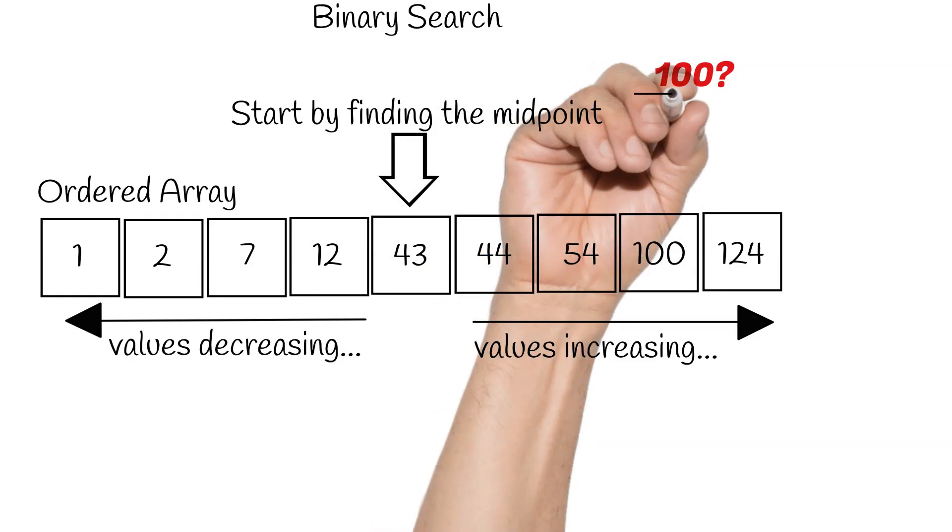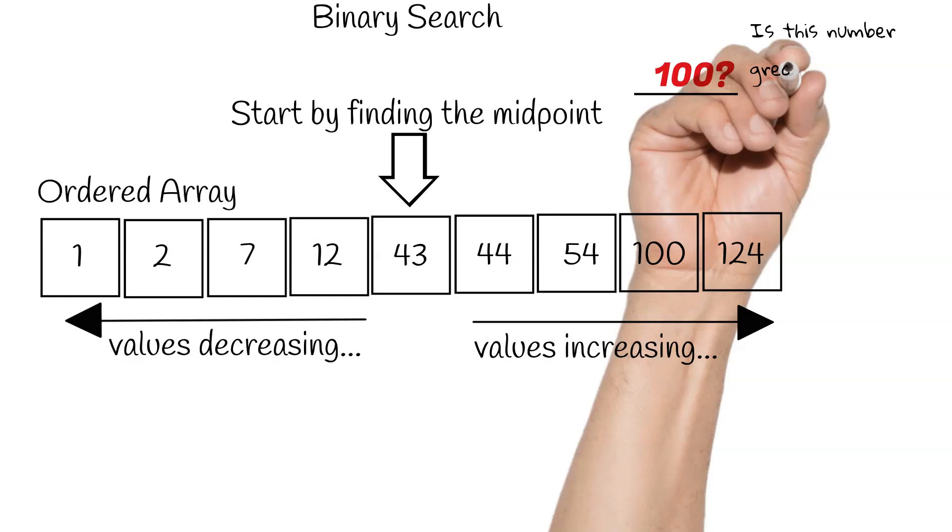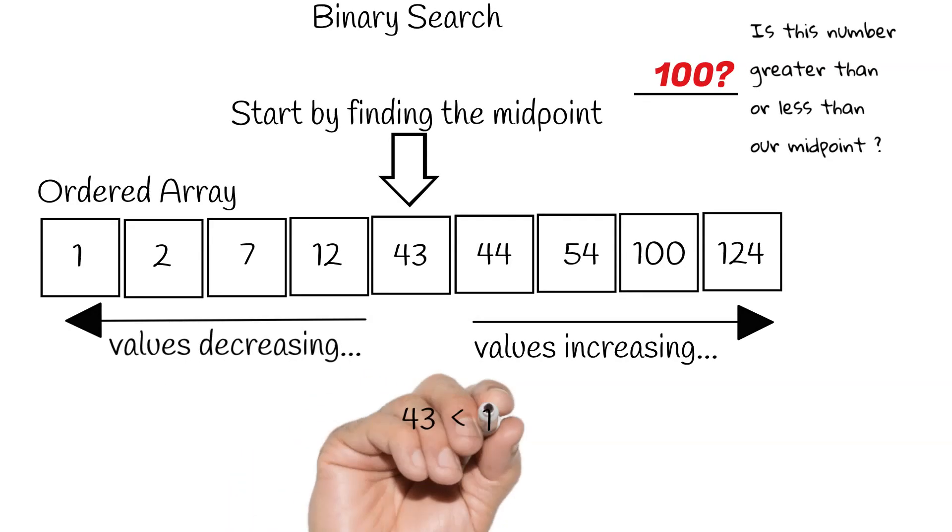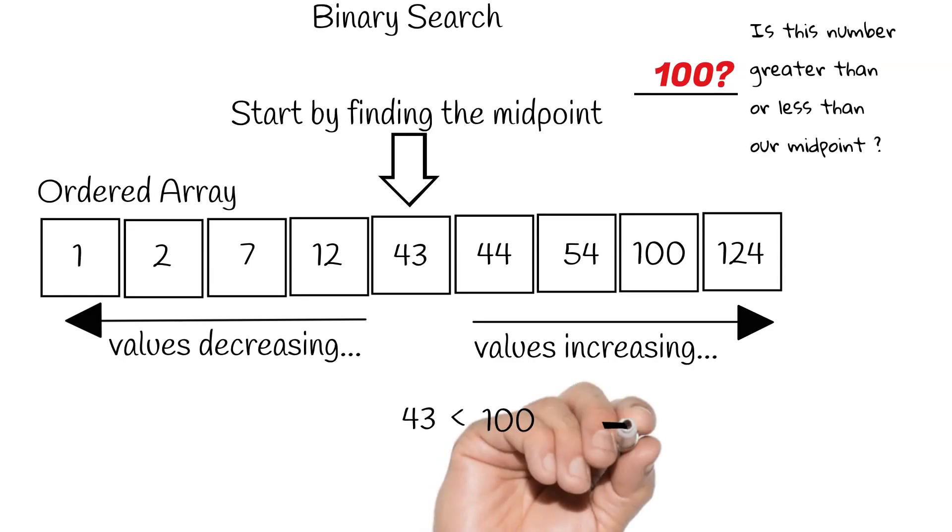So we need to figure out if this number 100, which we are searching for, is greater than or less than our midpoint. This will tell us which side of our array our number is on. So if we simply write out 43 is less than 100, we can actually see that the side of the array that our number is on is this side.